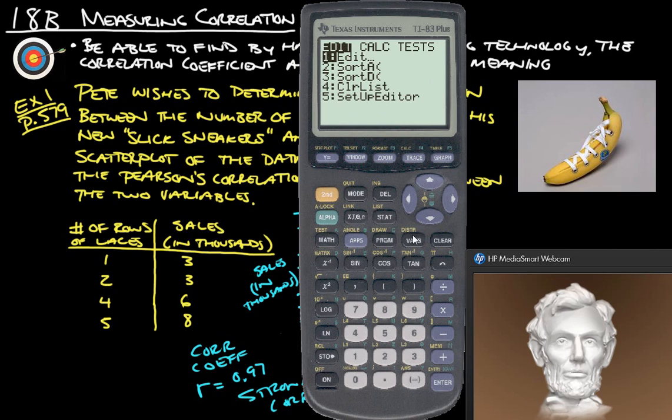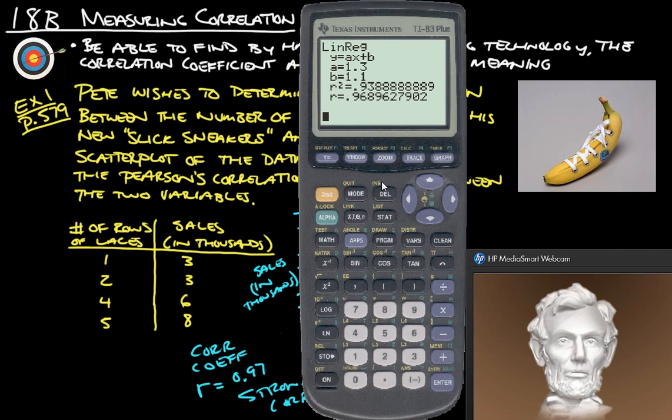And then if you go back in, if you didn't have it the first time, you go back into stat, calculate, linear regression, and if you hit enter on this one, you should now get your r squared and your r values.